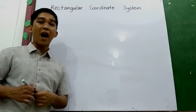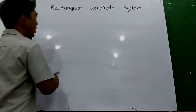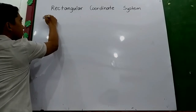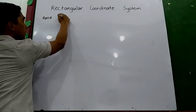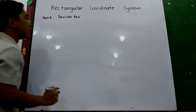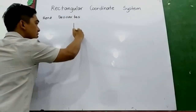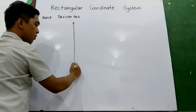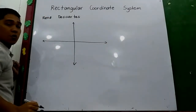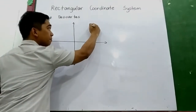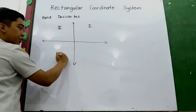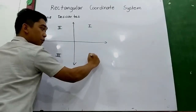It was invented by — the proponent of this coordinate system is René Descartes. Our coordinate system is composed of four different quadrants: quadrant 1, quadrant 2, quadrant 3, and quadrant 4.